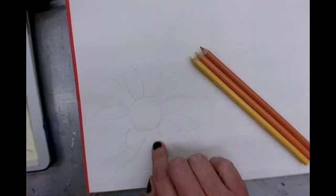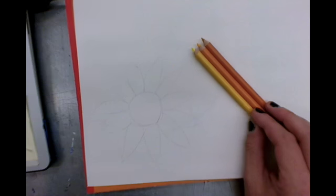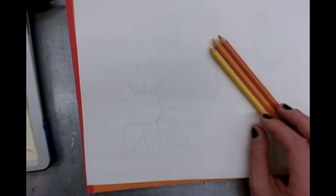So in this case I'm going to do a sunflower. So I grabbed myself three different shades of yellow—a dark, a medium, and a light—so that I'm able to add some shading.